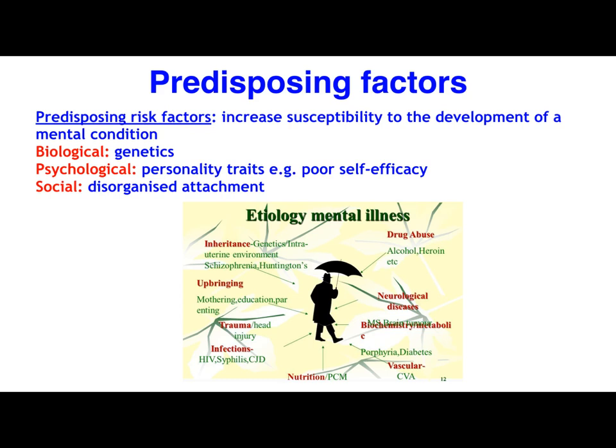In terms of predisposing factors, we're talking about pre-existing conditions that increase susceptibility to the development of a mental condition. Genetics is an obvious one. Personality traits such as poor self-efficacy — reflecting a lack of control over behaviour and social environment — can predispose someone to a variety of mental conditions. A disorganised attachment resulting from an inability to form a secure attachment during childhood can manifest as social isolation and emotional detachment, again predisposing that individual to mental conditions later in life.